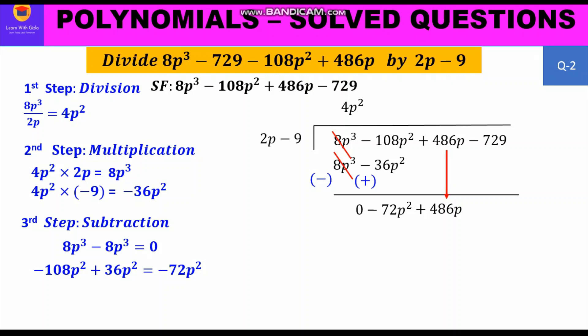New dividend: −72p² + 486p. Division: −72p² ÷ 2p = −36p. Multiplication: −36p × (2p − 9) = −72p² + 324p. Subtraction: change signs to +72p² and −324p. Then −72p² + 72p² = 0, and 486p − 324p = 162p. Bring down −729.